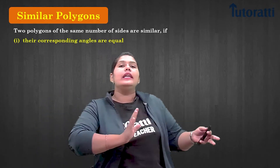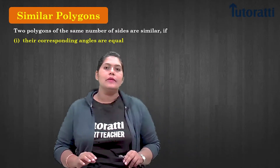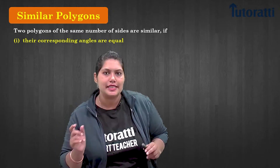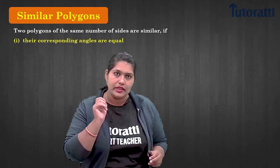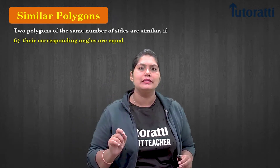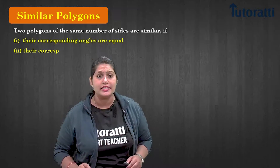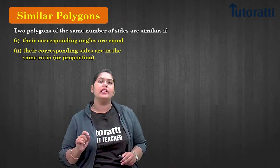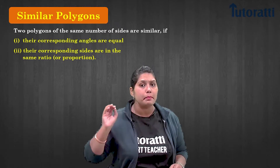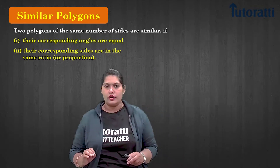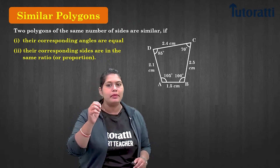The first condition is that their corresponding angles must be equal — that means the angles related in proper sequence must have the same measurement. The second condition is that the sides should be in the same ratio, that is, they should be in the same proportion.